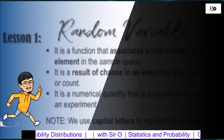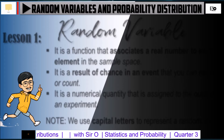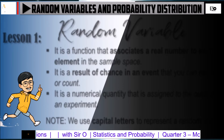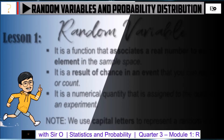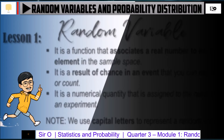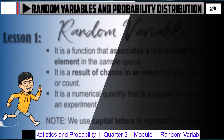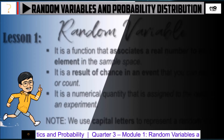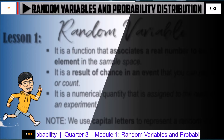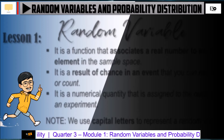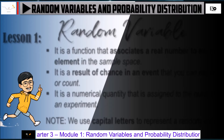Let us now proceed to the lesson proper. You have learned in your past lessons in junior high school mathematics that an experiment or trial is any procedure or activity that can be done repeatedly under similar conditions. The set of all possible outcomes in an experiment is called the sample space. The concept of probability distribution is very important in analyzing statistical data, especially in hypothesis testing. In this lesson, you will explore and understand the random variable. Before we discuss probability distribution, it is necessary to first study the concept of random variable.